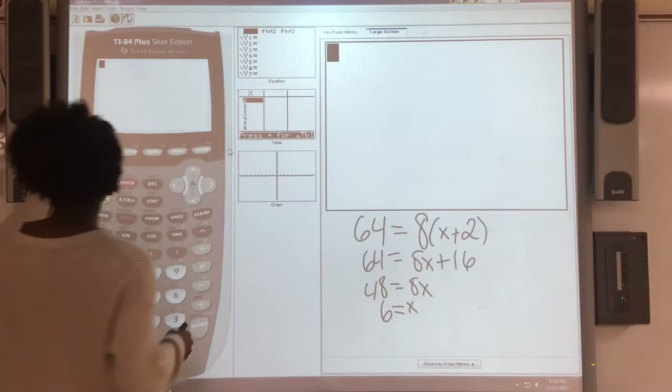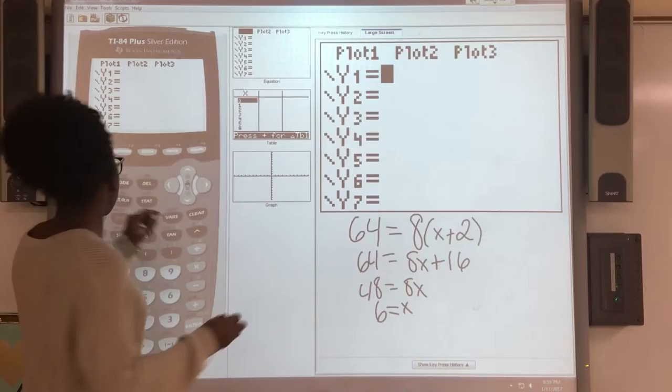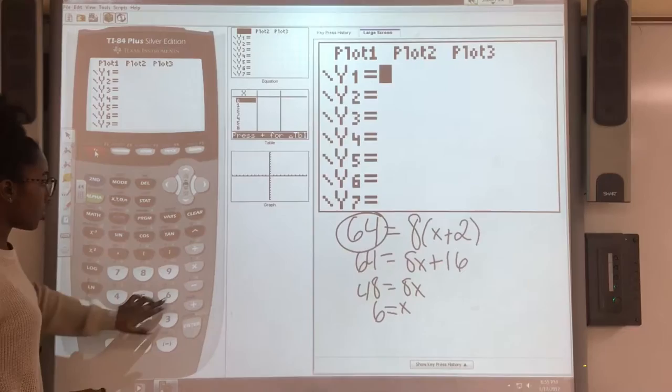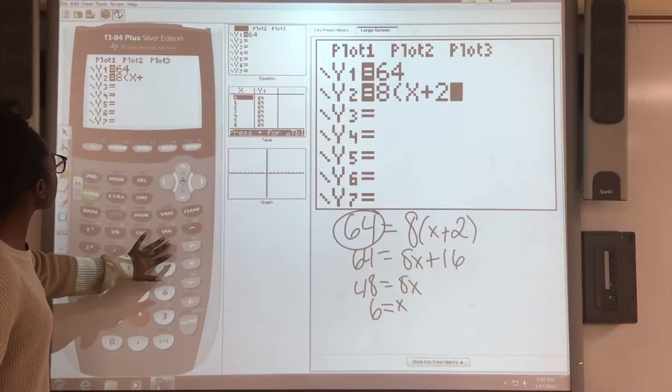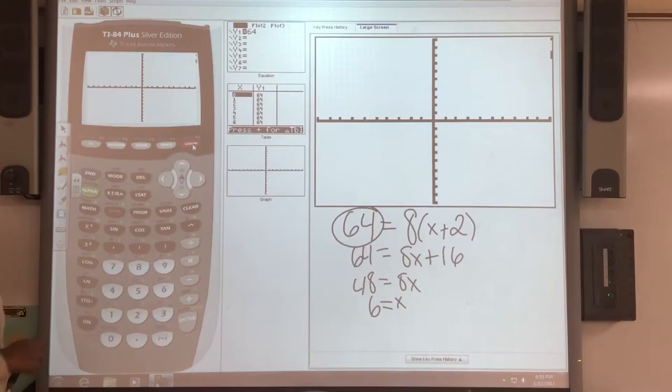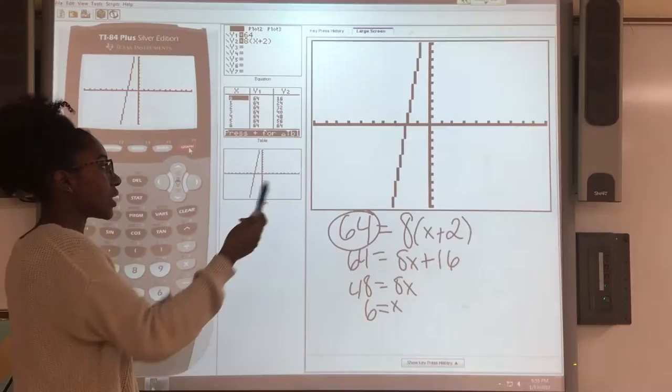Let's see if we can get that same answer in the calculator. You go to y equals and plug in the first value into y1. So you do 64, and then into y2, you plug in the value on the other side: 8 times x plus 2. From there, you just click graph. As you can see in this standard window, you can't see both of the graphs.